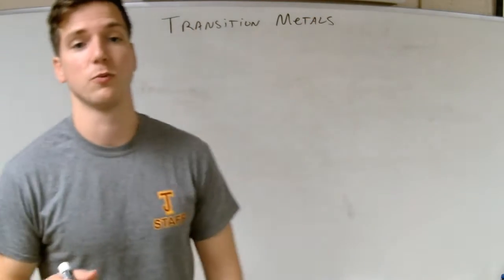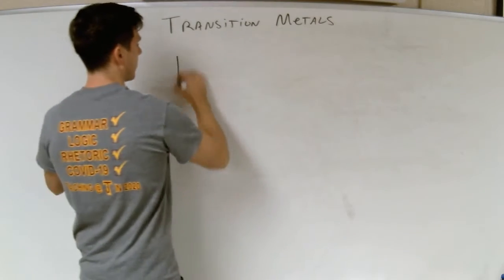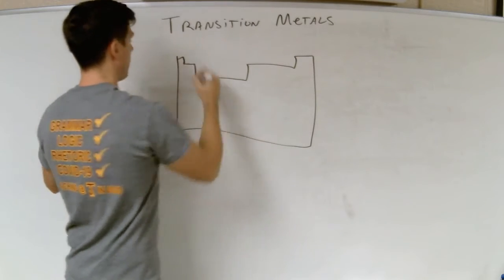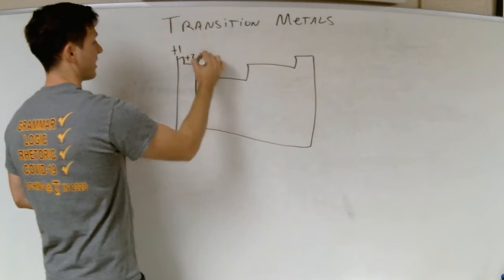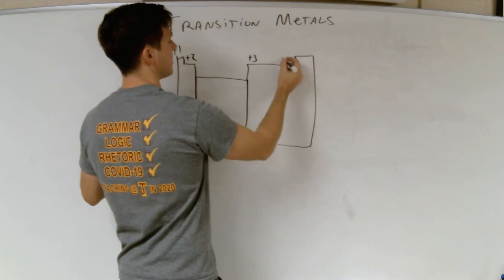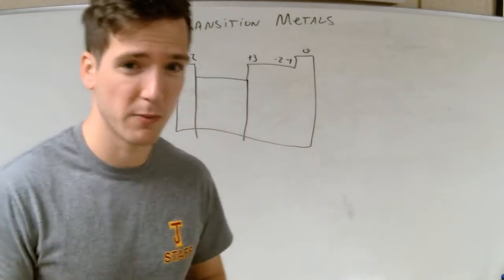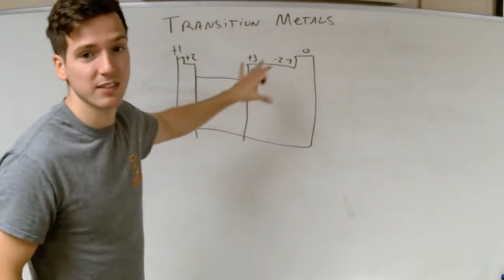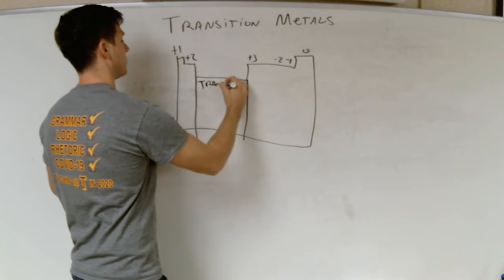Typically what we've been dealing with is metals with fixed charges. When we look at the periodic table, we've been dealing with stuff that has fixed charges like plus 1, plus 2, plus 3, minus 2, minus 1, 0, things like that. Every element we've dealt with has been given a certain charge, especially in that positive range. But what about these guys in the middle — these transition metals?